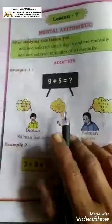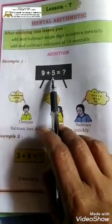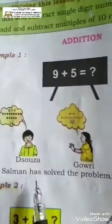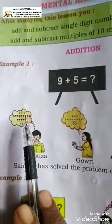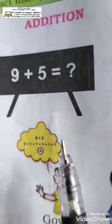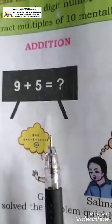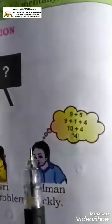We are going to see some examples. Here 9 plus 5 — what is the answer? We are going to add 9 plus 1 plus 1 plus 1 plus 1 plus 1, that is 5 ones, and 14 is the answer.